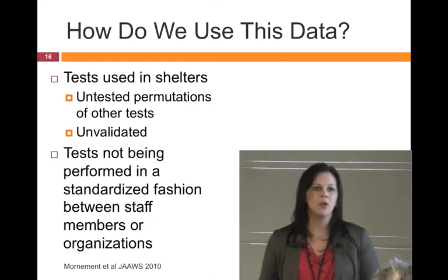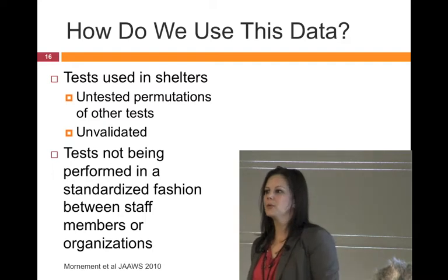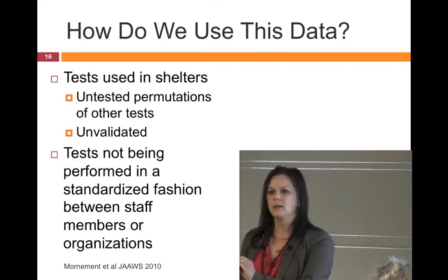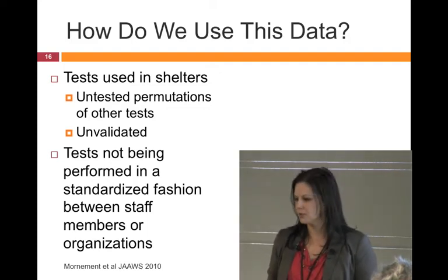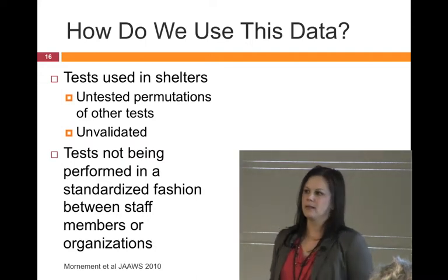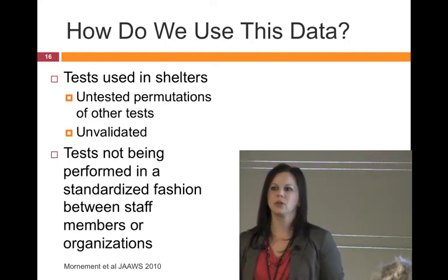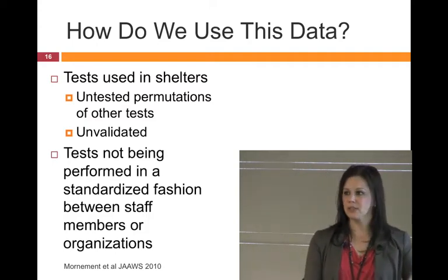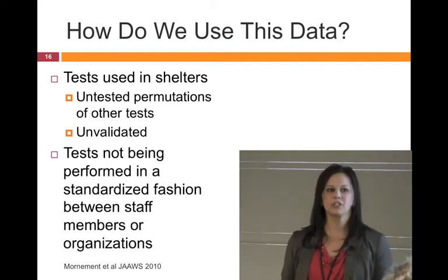What do we have in shelters now? Most of what we're seeing are untested permutations of certain tests — shelters will take one, keep the parts they like, add from another test, flip-flop the order, or leave subtests out. The problem is that the way we do these tests and the order we do them can actually change how a dog reacts. I'd encourage you to use a test in its entirety as it was written. If you feel you need more information, you can add additional subtests at the end, but adding or removing one in the middle can really change the information we're getting.